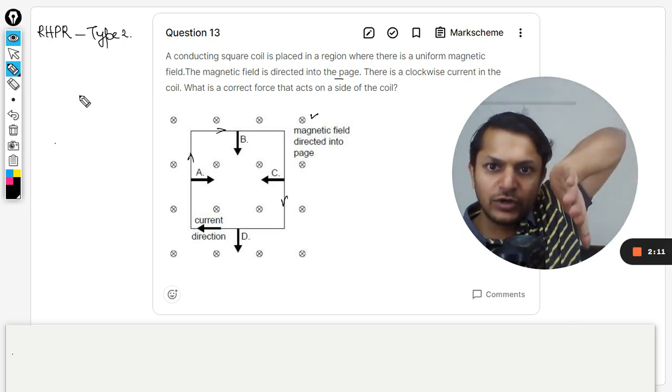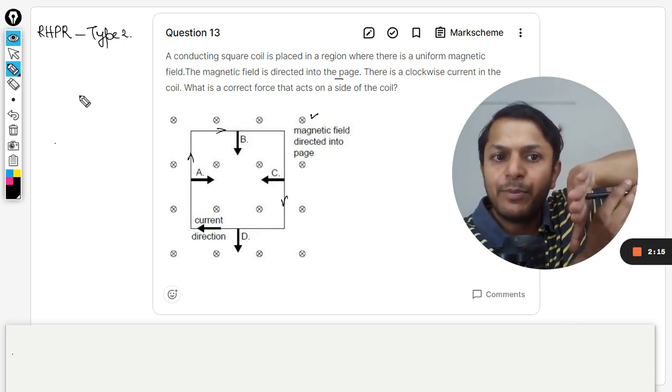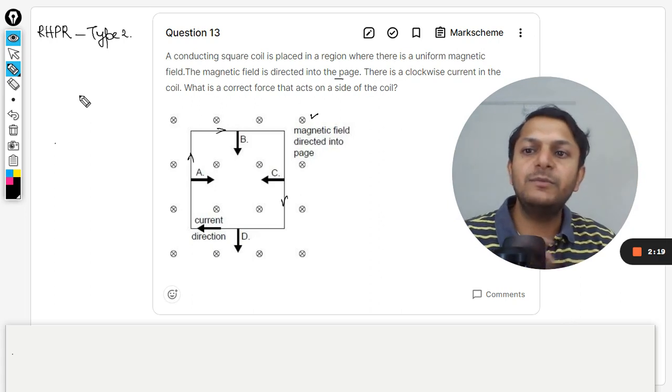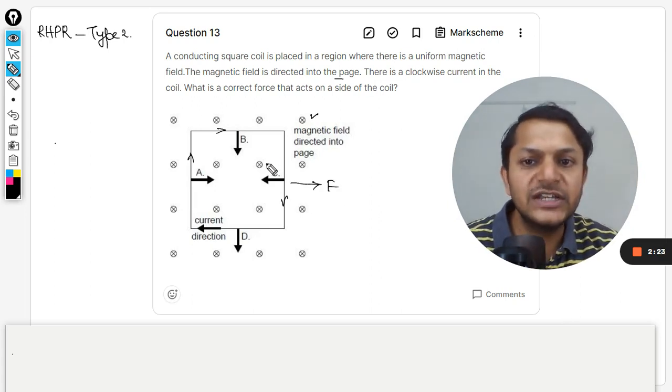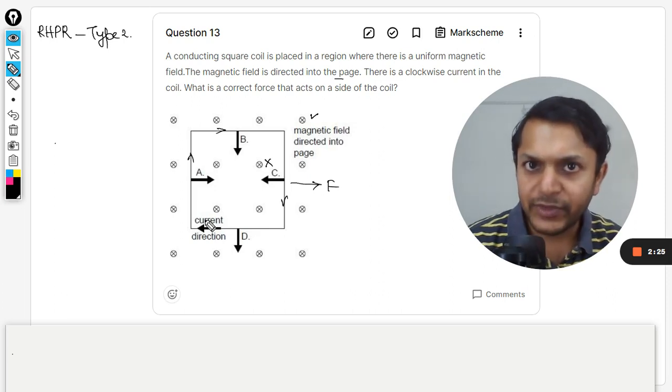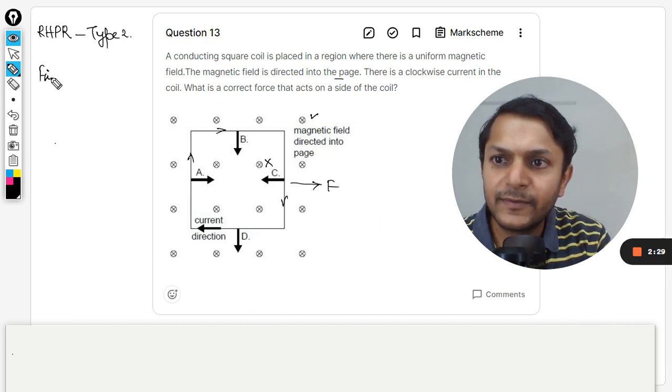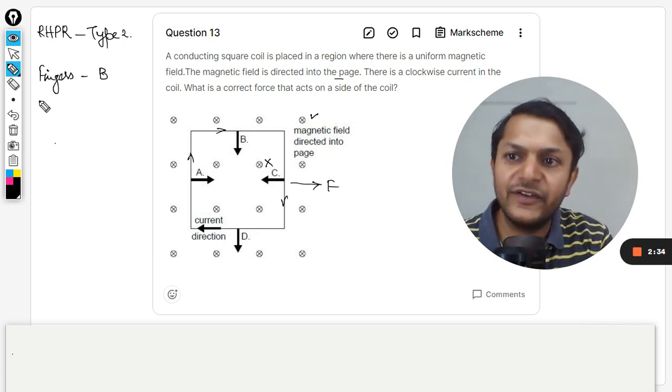If I am talking about the C part of the loop, the current is downwards and the magnetic field is inwards. So where is my palm? My palm is pointing towards right hand side. It means that C will be experiencing a force in the right hand side, so C direction is definitely wrong. Similarly, we are going to apply this rule for all of this.